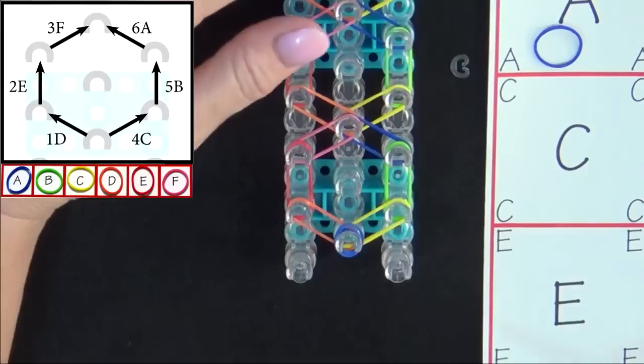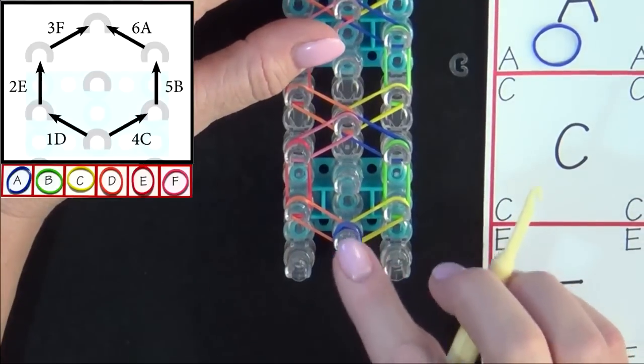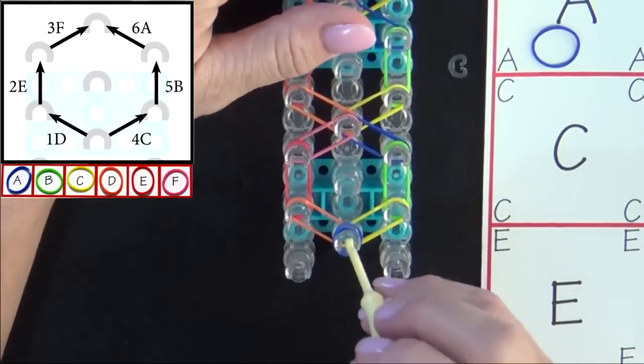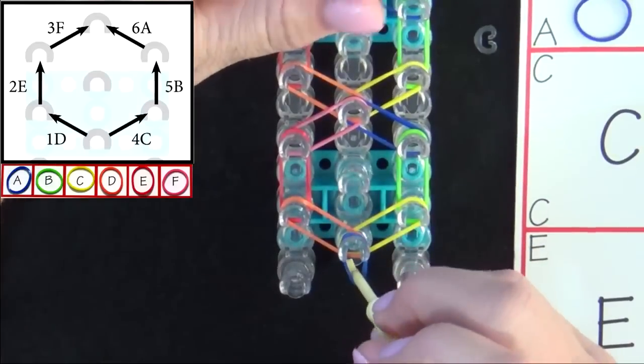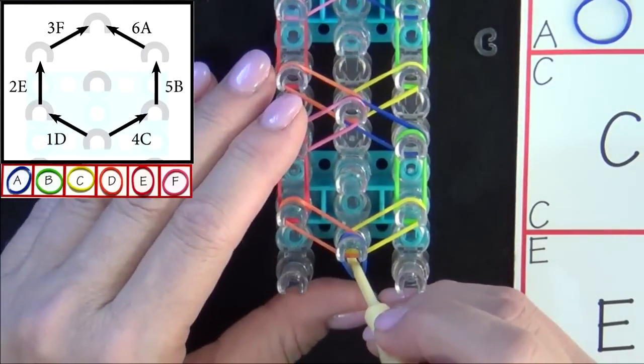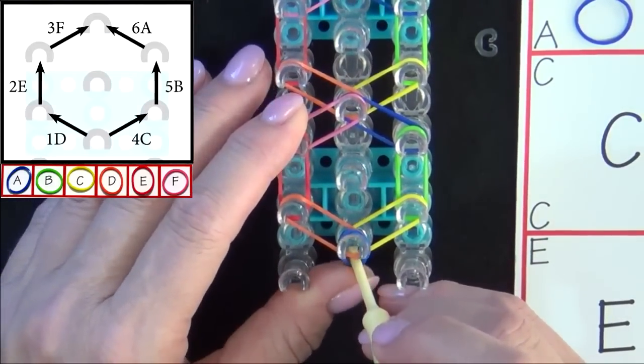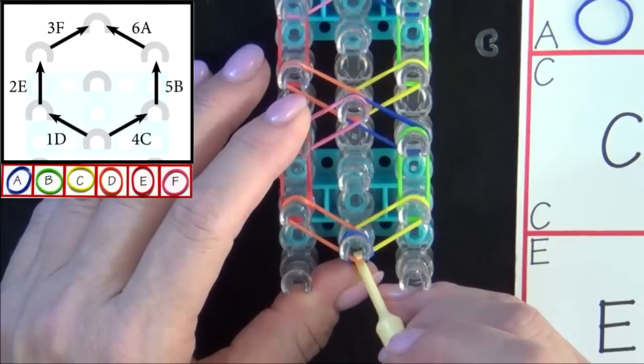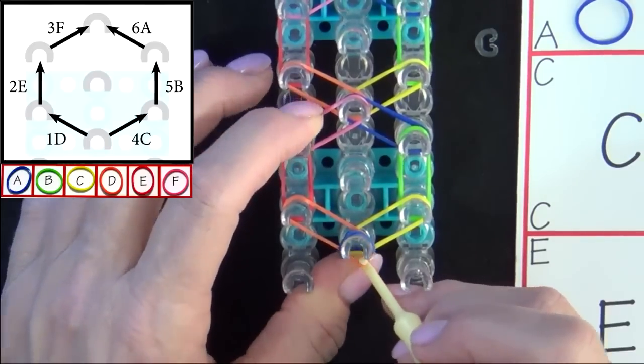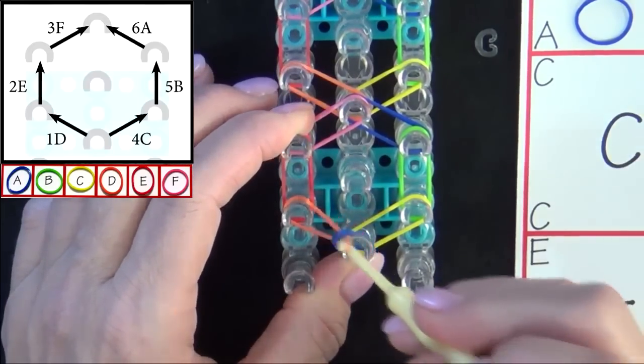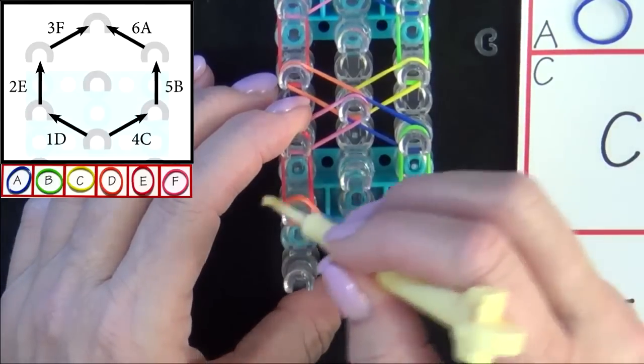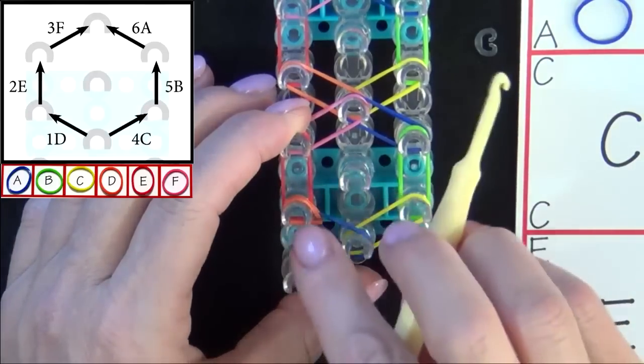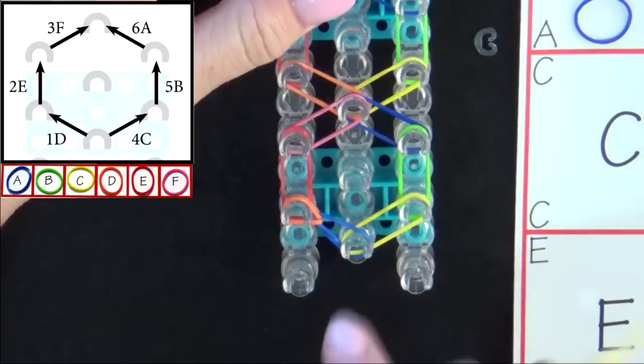Refer to the graphic on your screen as we loop the first 6 bands. We'll start from the middle pin. And you'll pull back the cap band with your hook. You'll reach in and grab the top band on that pin. And you will be looping band 1D. Hold the cap band down with your thumb and loop the band out to the left. Notice how it made this teardrop shape. That shows you that you grabbed the right band.